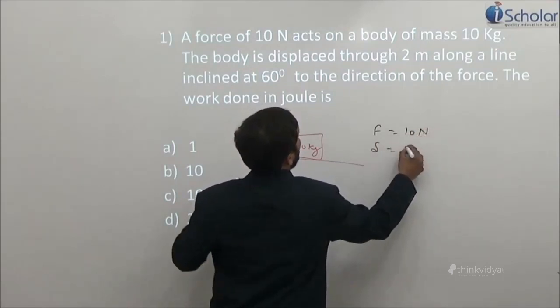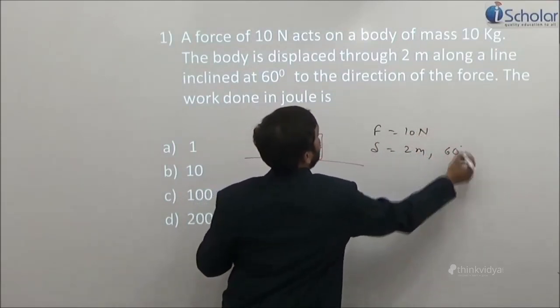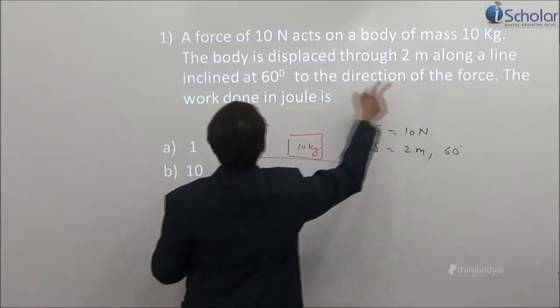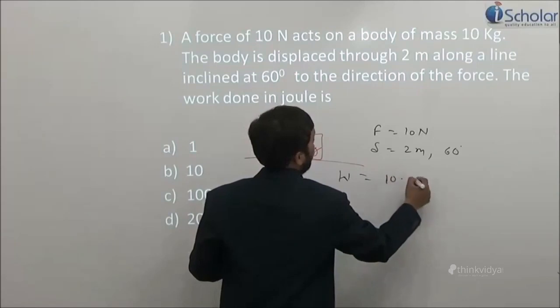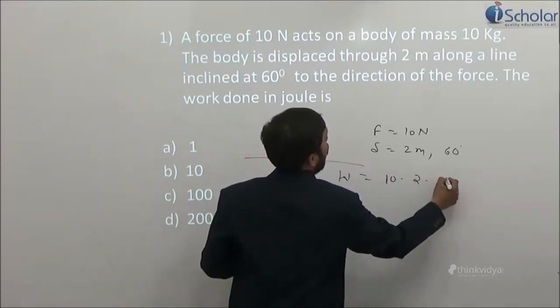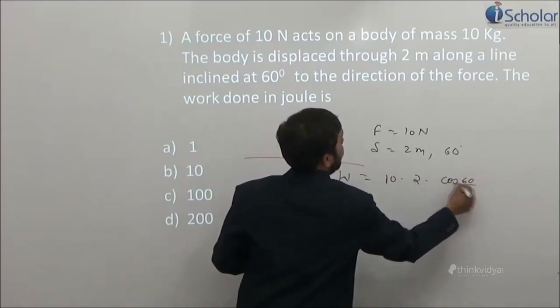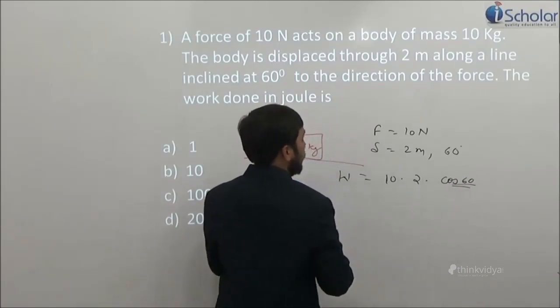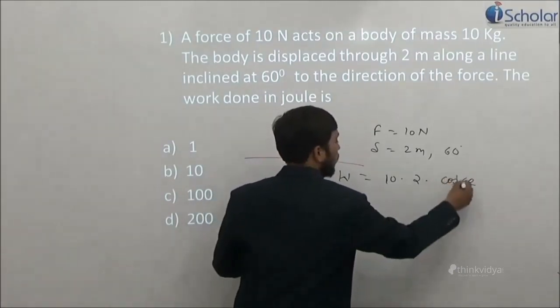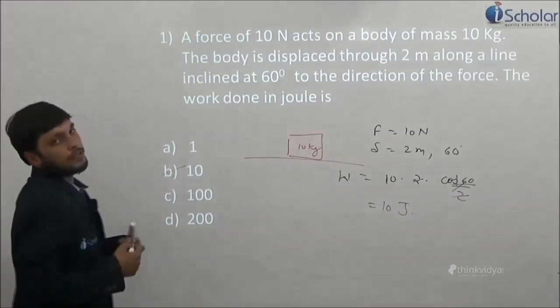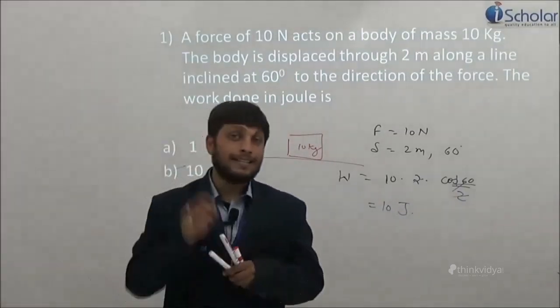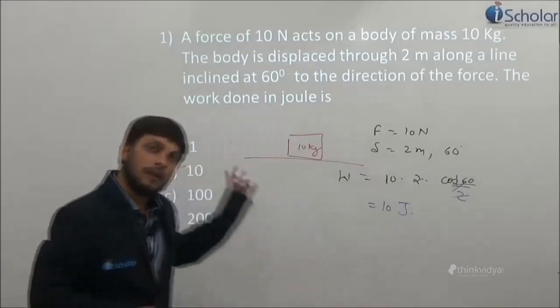Force is equals to 10 Newton. Displacement is 2 meter at 60 degree. So what is the work done if they ask? The work done in joules is work equals to F S cos theta. This is equals to 1 by 2. So the answer is 10 joules. Joule is the SI unit of work done.